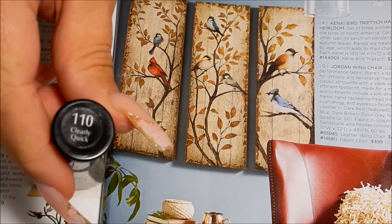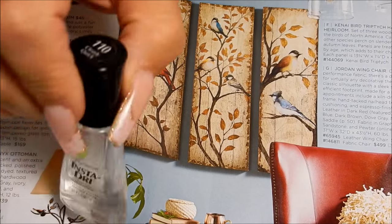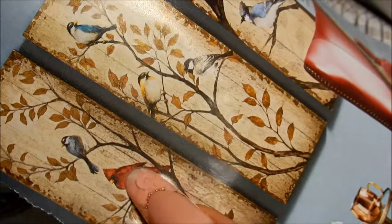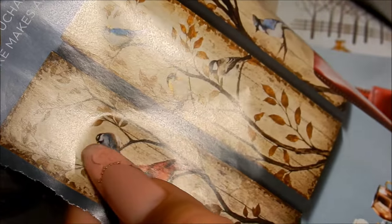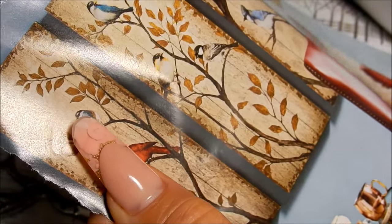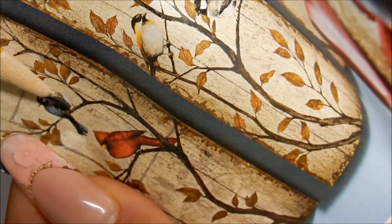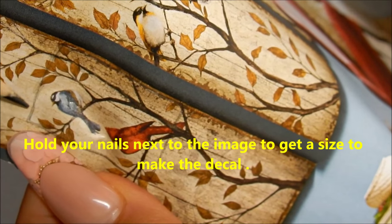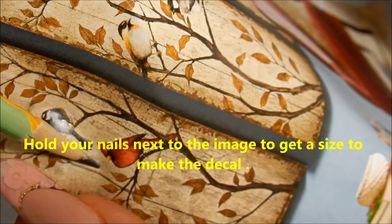I found an image in this magazine here and I'm going to use the bird image. I'm going to be putting it on my thumbnail. I've held up my nail to where I want the image and I've just taken a pencil and made a square around the image that I want to use.